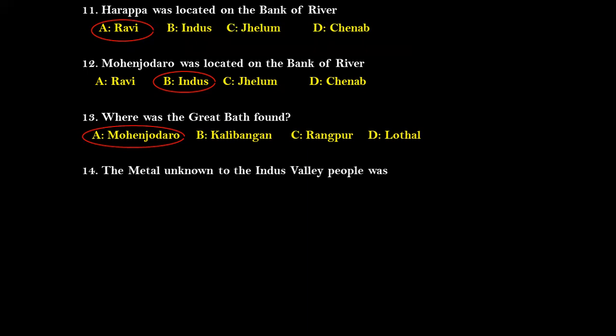Question fourteen: Which metal was unknown to the Indus Valley people? Options are bronze, stone, copper, and iron. The right answer is iron. The Indus Valley Civilization existed during the Bronze Age — they used bronze, stone, and copper — so the only metal unknown to them was iron.